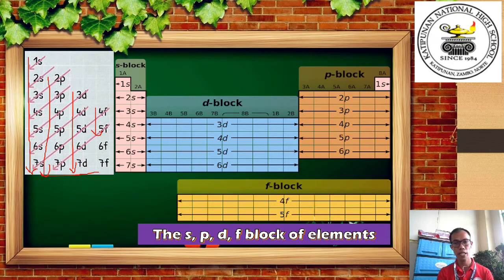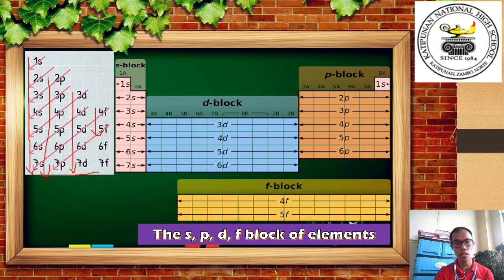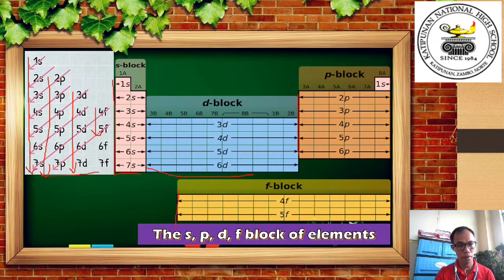Where are these s, p, d, and f blocks located? Here are the 1A and 2A elements — these belong to the s block. Here is the p block, shown in orange. The d block is shown in blue. And here is the f block.